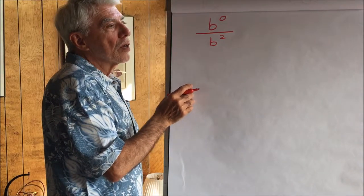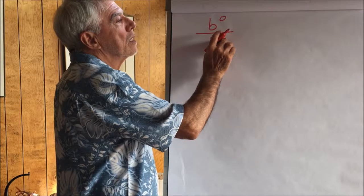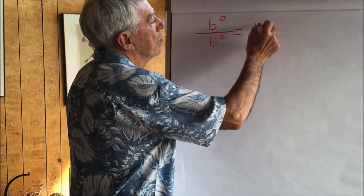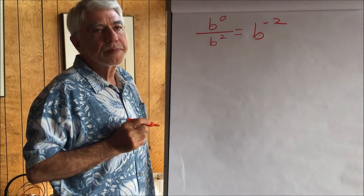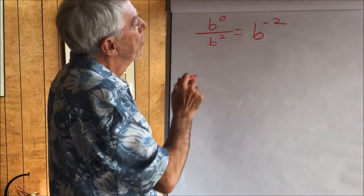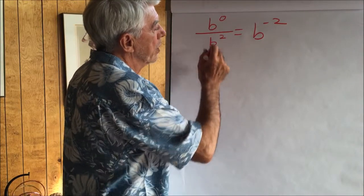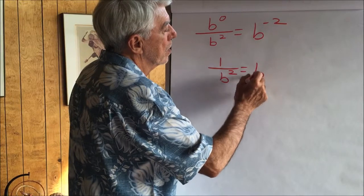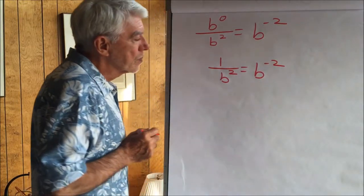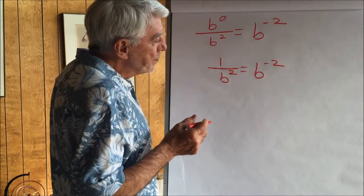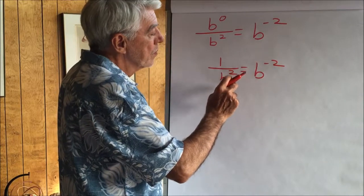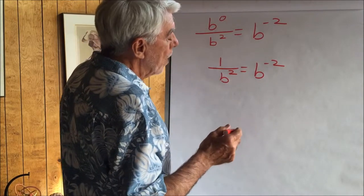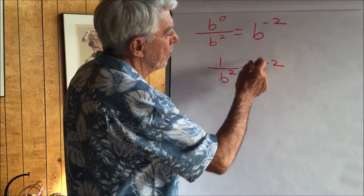How about we take b to the zero and divide it by b squared? Our rule in division: we subtract the exponent of the denominator from the numerator. So this is going to be zero minus two — b to the minus two. Now we know that b to the zero is one, so we can rewrite this as one over b squared equals b to the minus two. So b to the minus two is one divided by b squared.